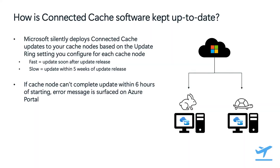Another common question we get from customers is how is Connected Cache software kept up to date? Microsoft silently deploys Connected Cache updates to your cache nodes based on the update ring setting that you configure for each cache node through the Azure Management Portal or CLI. If you choose the fast ring, then it will update soon after the update is released by Microsoft. If you choose the slow ring, then your cache node will update within five weeks of update release. If the cache node can't complete the update within six hours of starting, you'll see an error message surfaced on the Azure Management Portal.